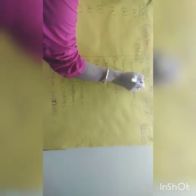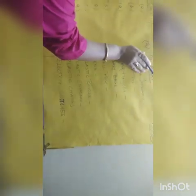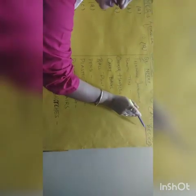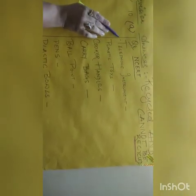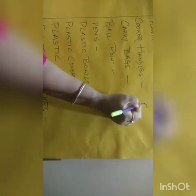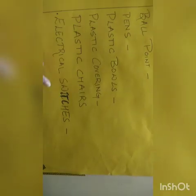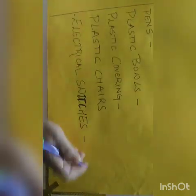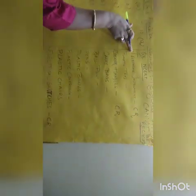Now, I left one question from NCERT — that is question number 8, which asks about objects which can be recycled and objects which cannot be recycled. The objects which cannot be recycled are: number 1, telephone instrument; number 2, cooker handles; and number 3, electrical switches.